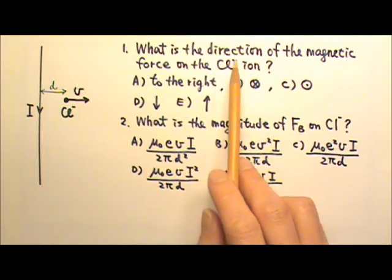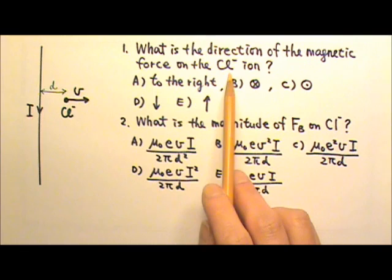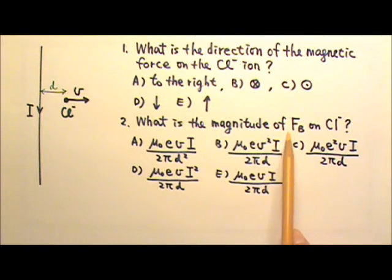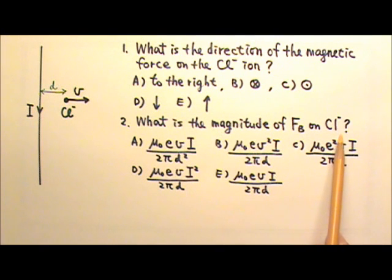Question 1: What is the direction of the magnetic force on the chloride ion at this moment? Question 2: What is the magnitude of the magnetic force on this chloride ion at this moment?